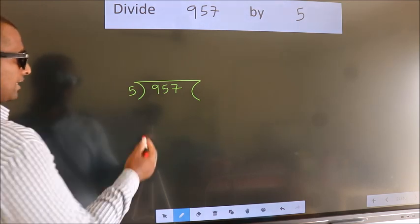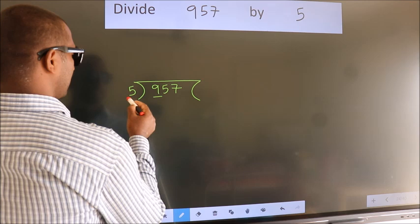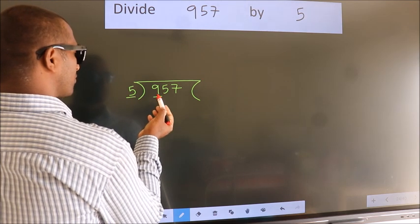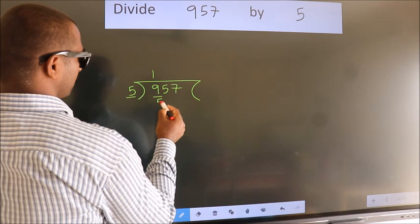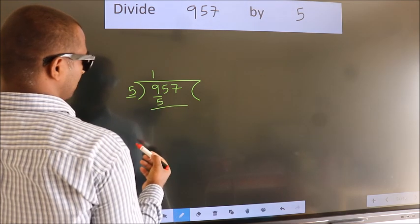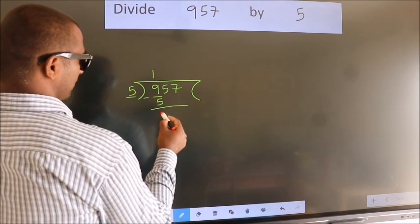Next, here we have 9, here 5. A number close to 9 in the 5 table is 5 once 5. Now we should subtract. We get 4.